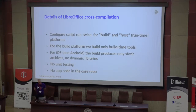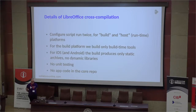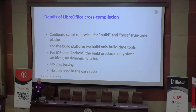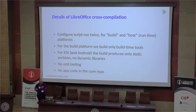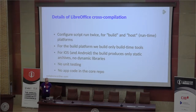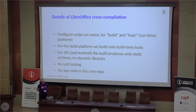When you build the LibreOffice core code for iOS or for Android, what happens is that you run the configure script twice — or it gets run automatically twice — separately for the build machine. For iOS, that is a Mac, and separately for the runtime platform or host as AutoConfig calls it. For the build platform, we only build those tools that are needed while building the code for the actual target device. And like for Android, we only build static archives, no dynamic libraries.